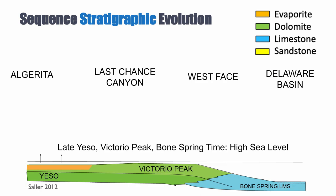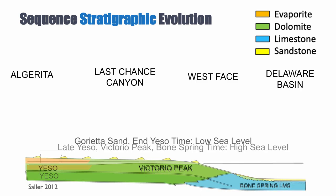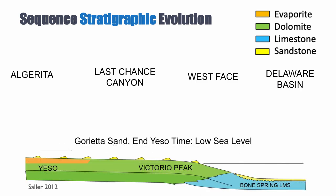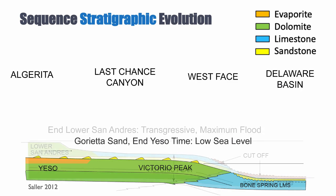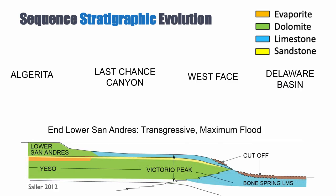At the top of this comes a base level lowering. We have a low stand characterized by sand, both in the basin and on the platform. And then after this, base level rises, and that gives rise to the lower San Andreas formation.